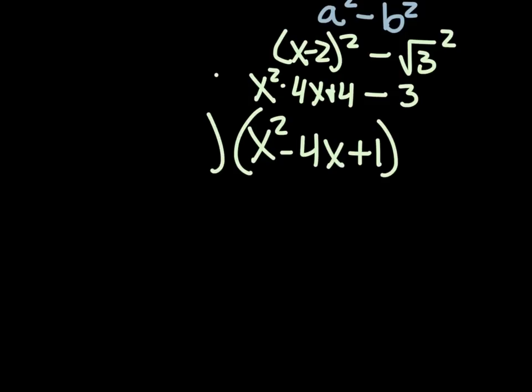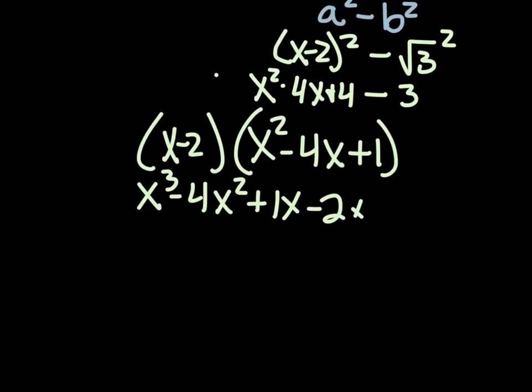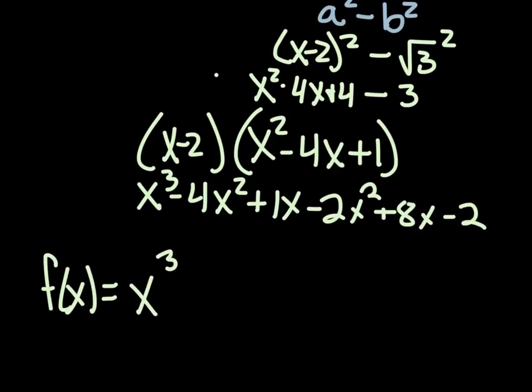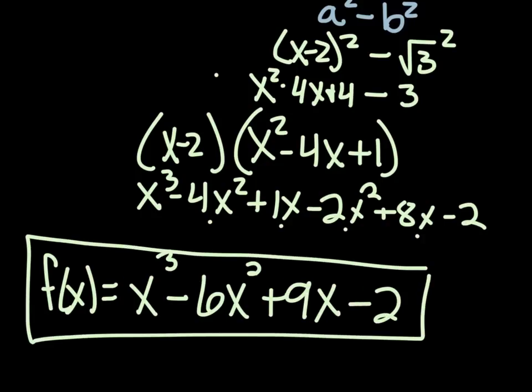And of course, I still have to multiply that by x minus 2, but at least I've shortened the process a little bit. So now we have x cubed minus 4x squared plus 1x minus 2x squared plus 8x minus 2. It gives us a final polynomial of x cubed minus 4 and 2 is 6x squared, and 1 and 8 is 9x minus 2. So there's your polynomial with your leading coefficient of 1 and zeros of 2 and 2 plus the square root of 3, because we automatically knew we had to include 2 minus the square root of 3, and then we multiplied that all together and came out with this polynomial.